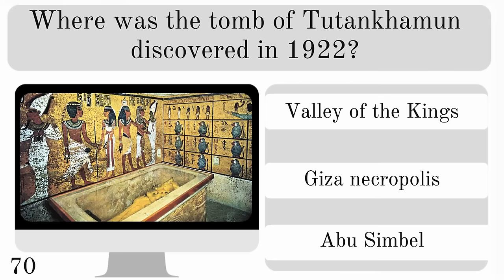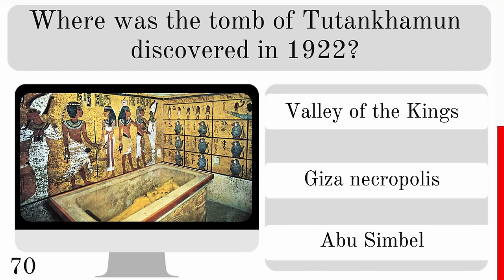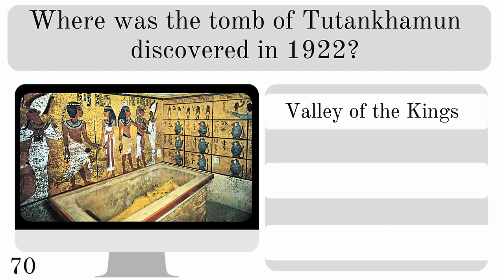Where was the tomb of Tutankhamun discovered in 1922? In the Valley of the Kings, the Giza Necropolis or Abu Simbel? And that was discovered in the Valley of the Kings.